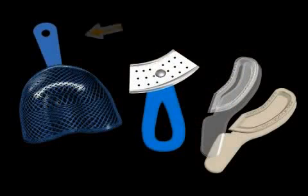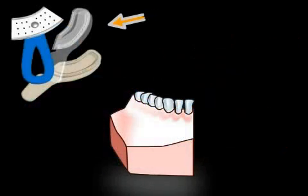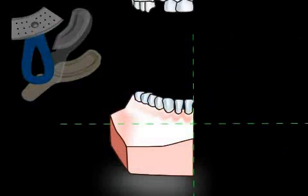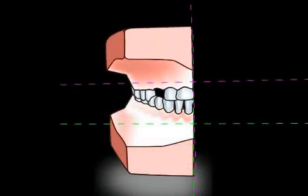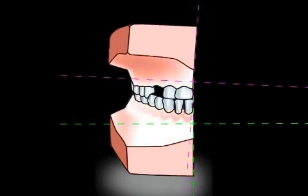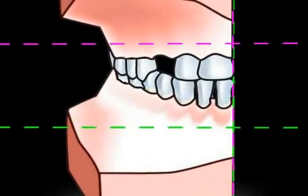Impressions should always be taken with full impression trays, seen on the left of the image. As a rule, partial trays, as seen on the right, are not exact because the position of the plaster models cannot be precisely aligned with one another. With a partial tray, the dental technician obtains partial models. These can be swiveled and therefore can't be accurately positioned.